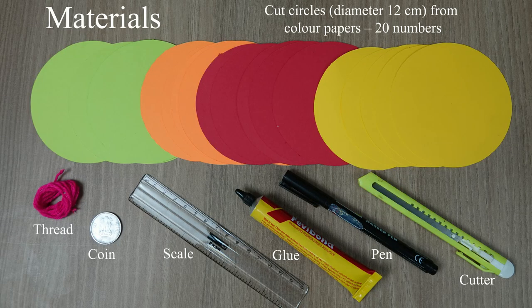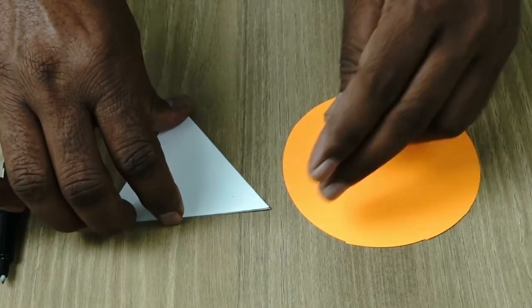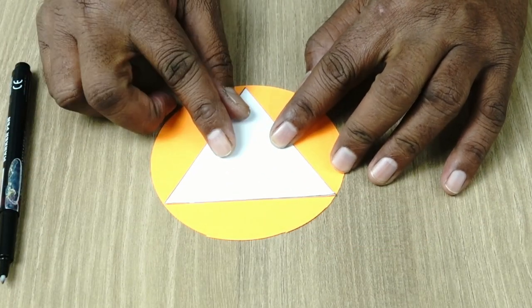In order to make the lantern, you are going to need cut circles from colored papers, a triangle for reference, some coins and some other material.